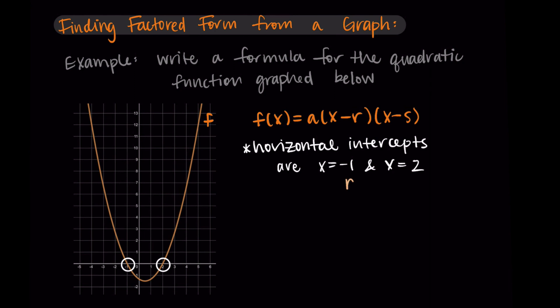Let's let r be the negative one and s be the two. So we can take these values and put them into the formula. So I have f(x) = a, we'll still need to find a, but then I have (x - (-1))(x - 2). So I've replaced r and s with my horizontal intercepts.